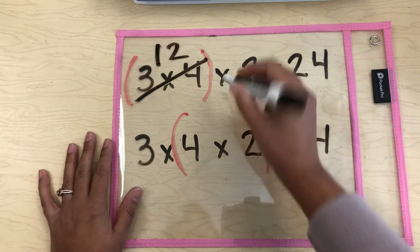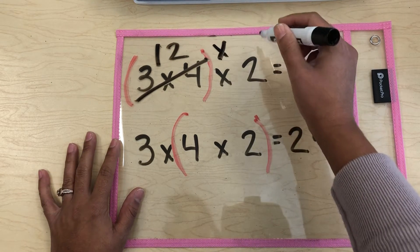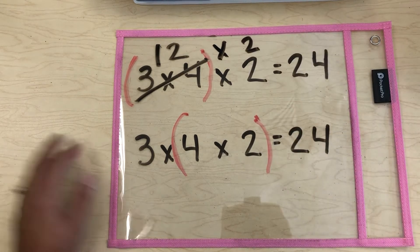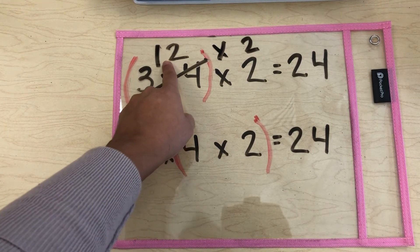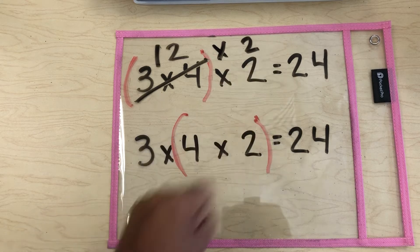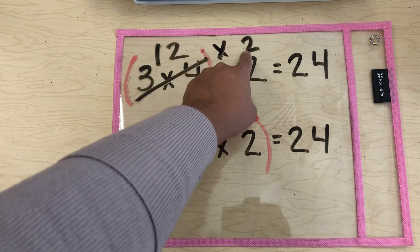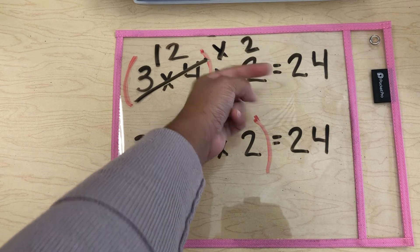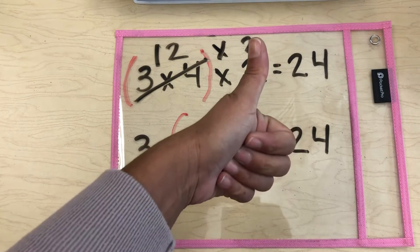Then we're going to put the times up here and move that 2. So our new multiplication problem is 12 times 2. What is 12 times 2? If you said 24, you are right.